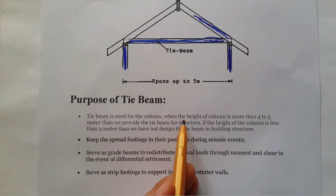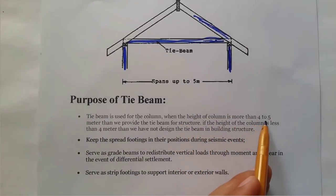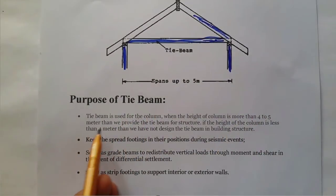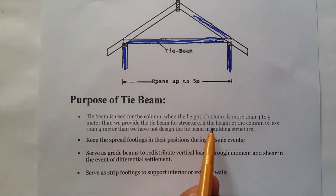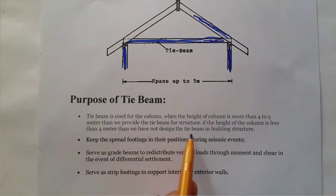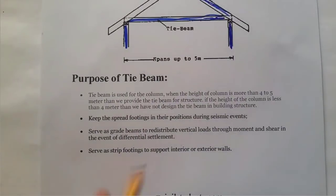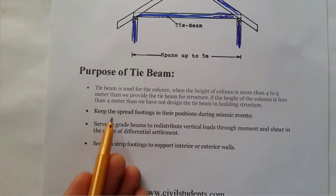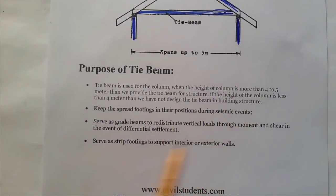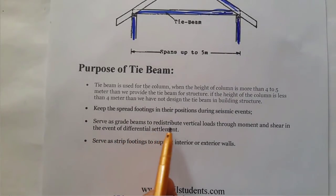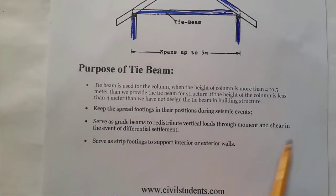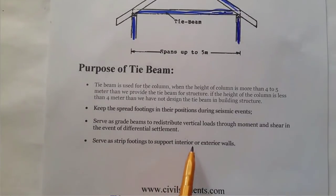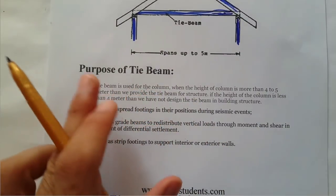Tie beam is used when the height of a column is more than 4 to 5 meters — in that case we must provide a tie beam. If the height of the column is less than 4 meters, then it is not necessary to design a tie beam. The purposes of tie beam include: keeping the spread footing in position during seismic events; serving as a grade beam to redistribute vertical loads through moment and shear in events of differential settlement; and serving as a stirrup for footings to support interior or exterior walls.